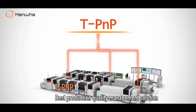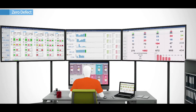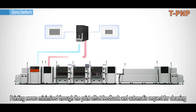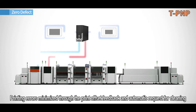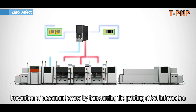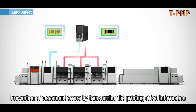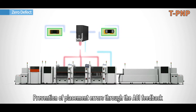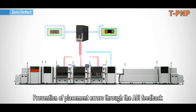TPNP is the best production quality management solution. The SPI transfers the print offset feedback and requests automatic stencil cleaning by the printer to minimize printing errors. It also transfers solder print offset information to the chip-mounter to prevent placement errors. In addition, placement quality is improved by transferring mount offset information from AOI to the chip-mounter.